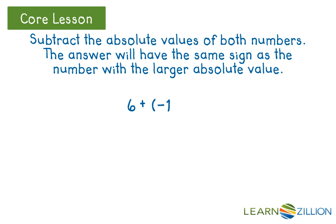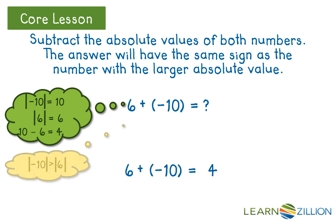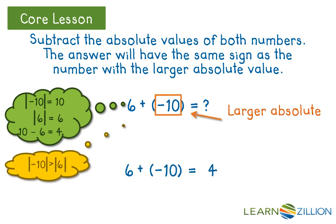Let's look at 6 plus negative 10. The absolute value of negative 10 is 10 and the absolute value of 6 is 6. 10 minus 6 is 4. Since negative 10 has a larger absolute value, the answer will be negative.